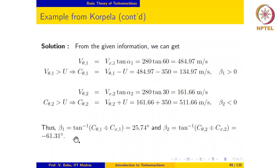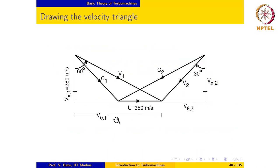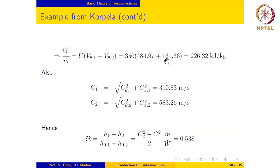The blade angle at inlet is evaluated as arctan(c_theta1 / c_x1), giving 25.74 degrees with a positive sign. The blade angle at outlet is arctan(c_theta2 / c_x2), giving 61.31 degrees with a negative sign. The specific power output is evaluated as: w-dot over m-dot equals blade speed u times (v_theta1 minus v_theta2). Since v_theta2 is in the opposite direction to v_theta1, they are added together, giving a specific power output of 226.32 kilojoules per kilogram.